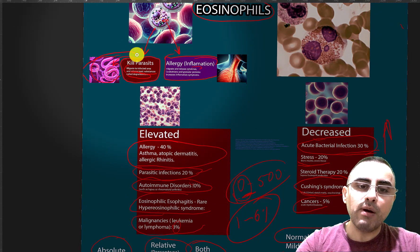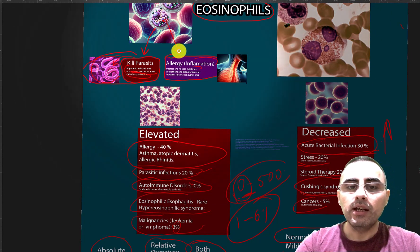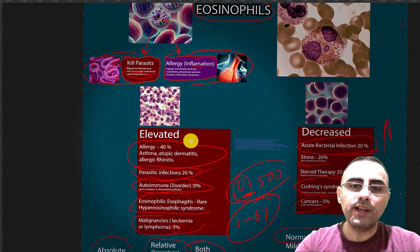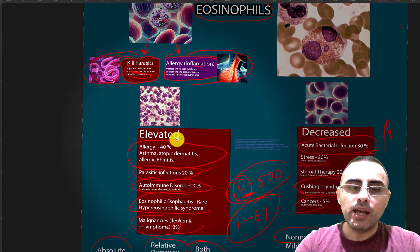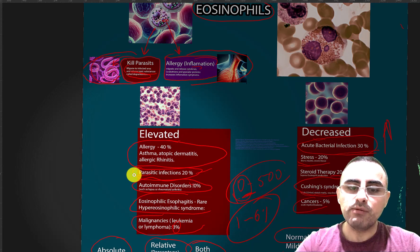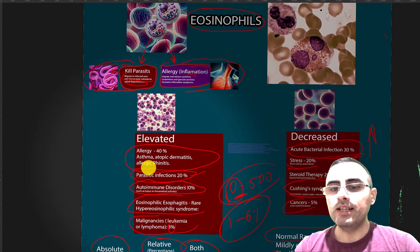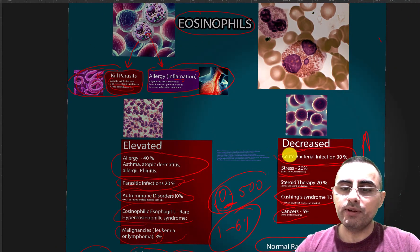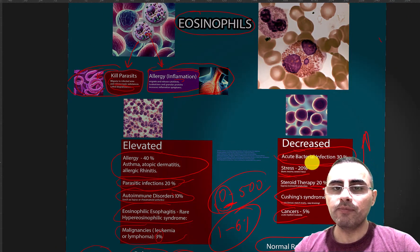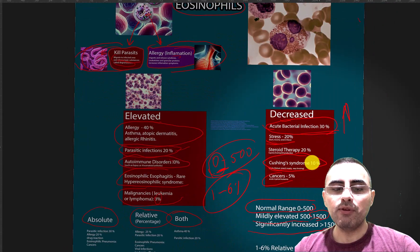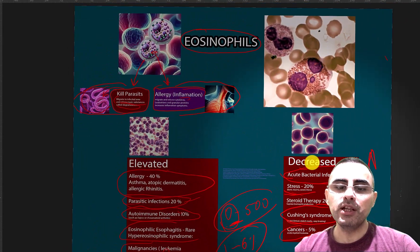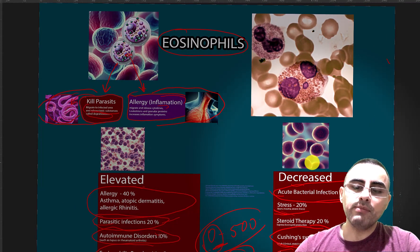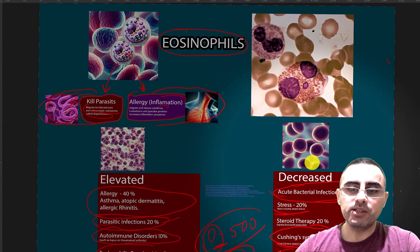To summarize: eosinophils are very important in fighting against parasites and in cases of allergy. The most common cause of eosinophil elevation is allergy and asthma. Another common cause is parasitic infection such as worms. Decreased eosinophils are most commonly caused by acute bacterial infection and acute stress. Thank you for watching — if you like my videos please thumbs up, and if you like my channel please subscribe.